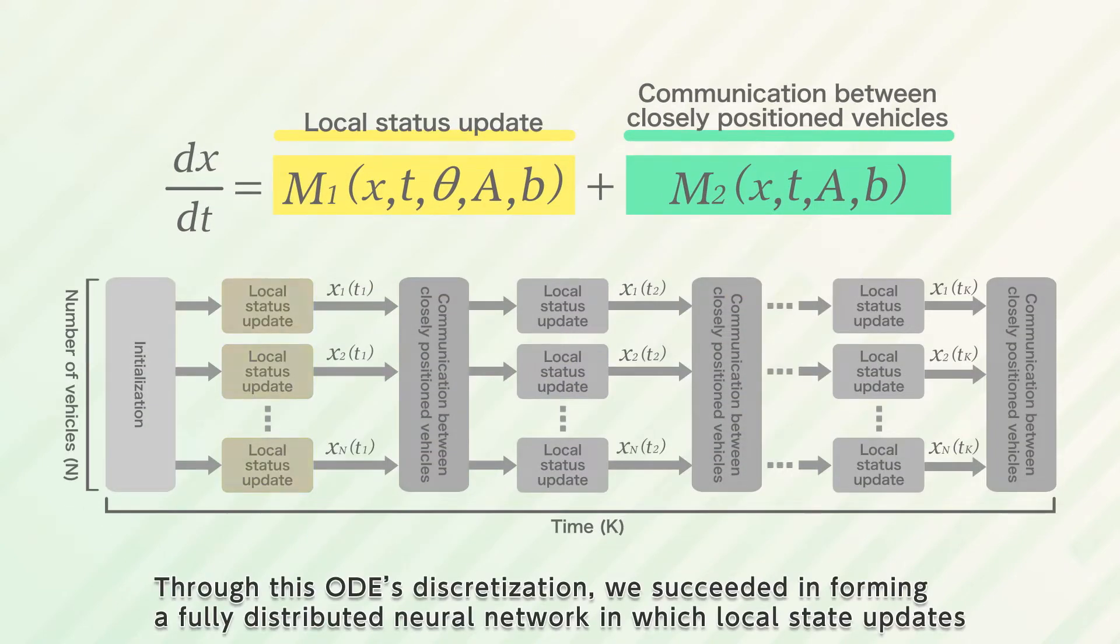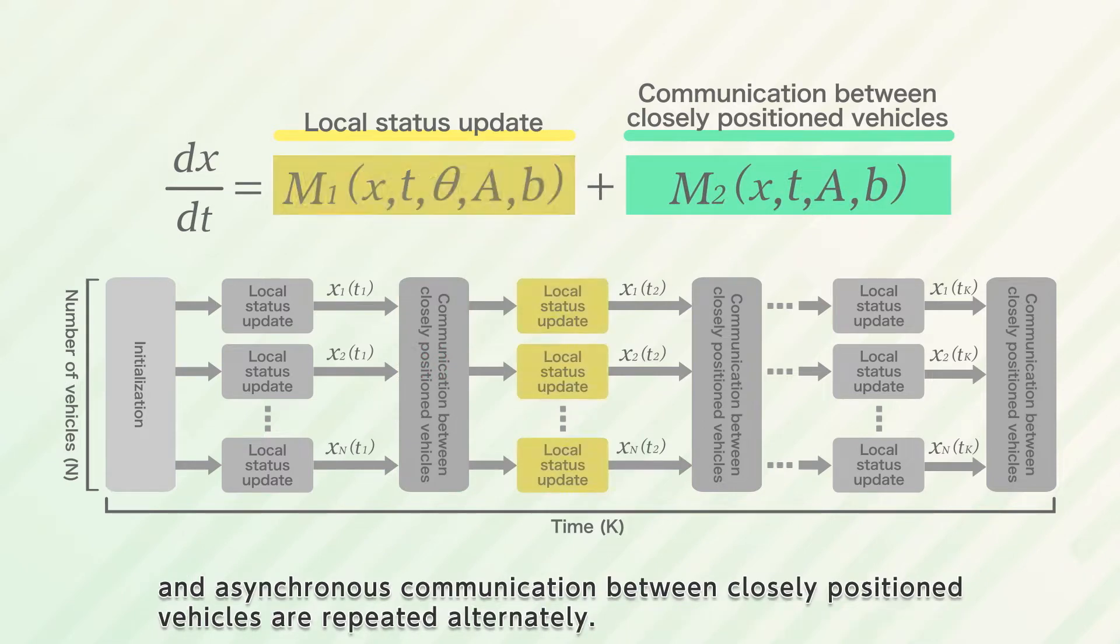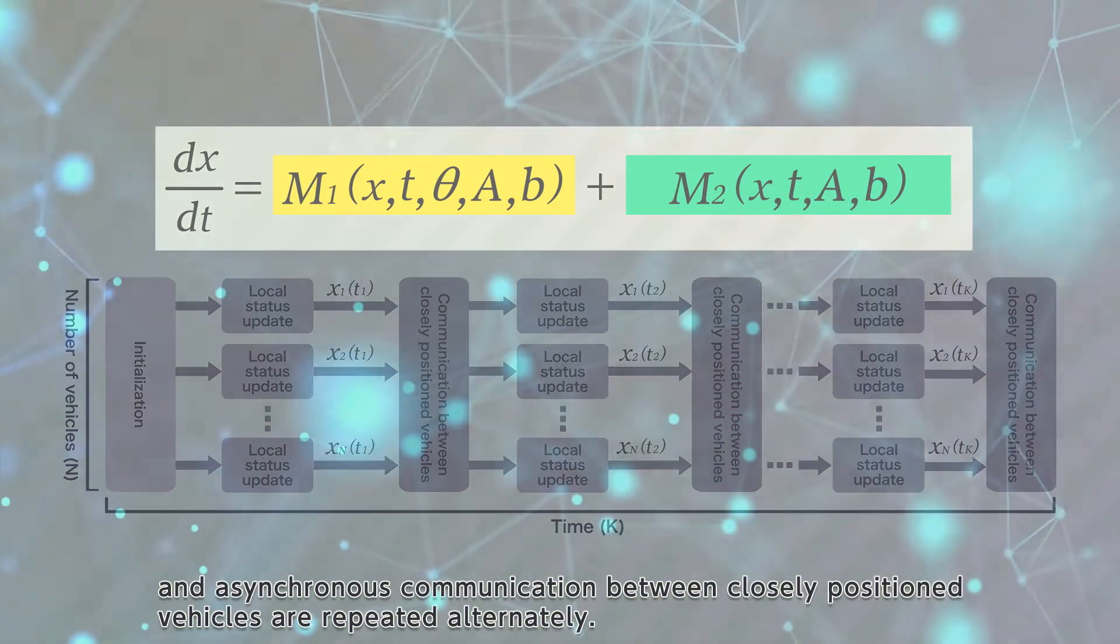Through this ODE's discretization, we succeeded in forming a fully distributed neural network in which local state updates and asynchronous communication between closely positioned vehicles are repeated alternately.